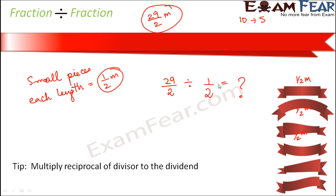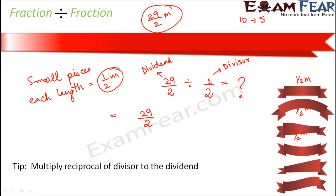Now, how do we divide? To divide, remember the simple rule: the divisor here is 1 by 2 and the dividend is 29 by 2. Dividing by 1 by 2 is the same as multiplying by its reciprocal, which is 2 by 1. So in order to divide two fractions, always multiply the reciprocal of the divisor to the dividend.